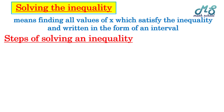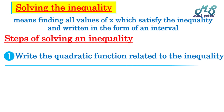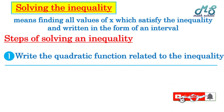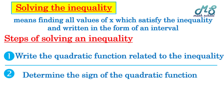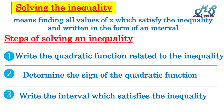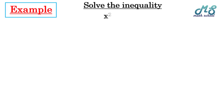Steps of solving the inequality — we have three steps. First, write the quadratic function related to the inequality. Second, determine the sign of the quadratic function, which we studied last lesson. Third, write the interval which satisfies the inequality. Example: solve the inequality x² - 5x + 6 > 0.